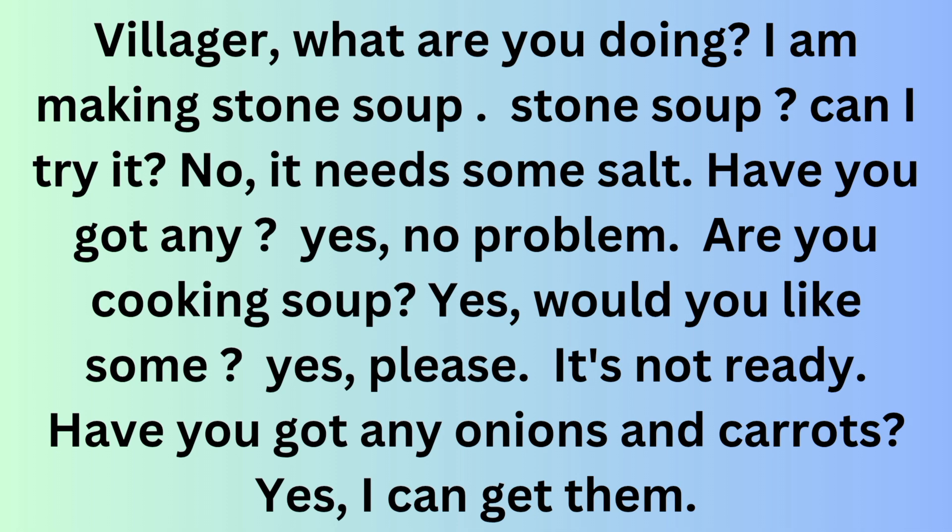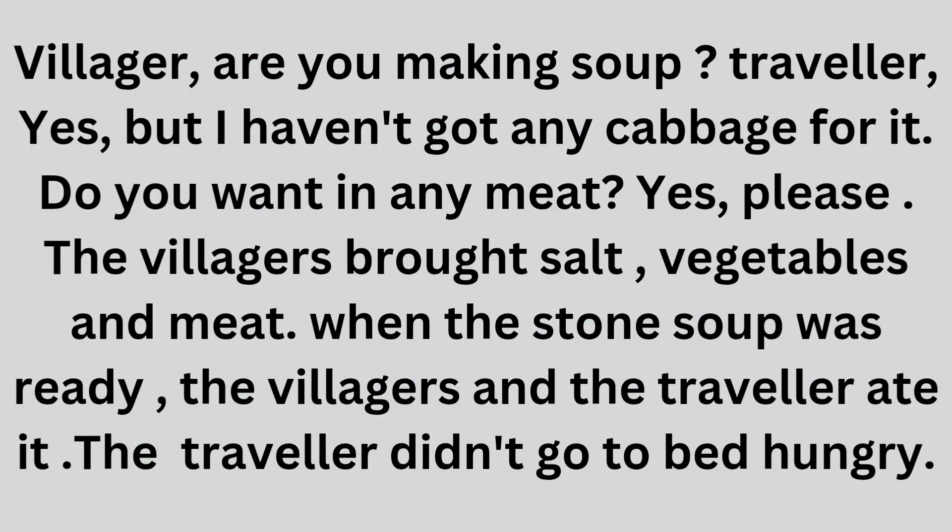Villager: Are you cooking soup? Traveler: Yes, would you like some? Villager: Yes, please. Traveler: It's not ready. Have you got any onions and carrots? Villager: Yes, I can get them. Another villager: Are you making soup? First villager: Yes, but I haven't got any cabbage for it. Other villager: Do you want any meat? Yes, please. Have you got any onions? The villagers brought salt, vegetables, and meat.